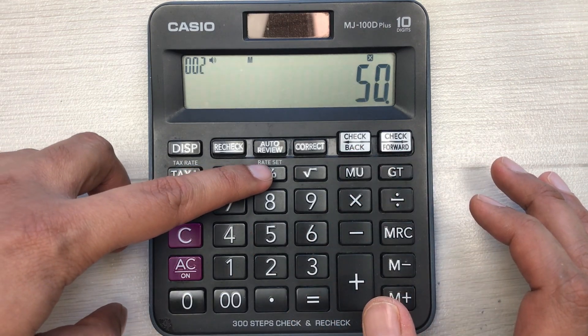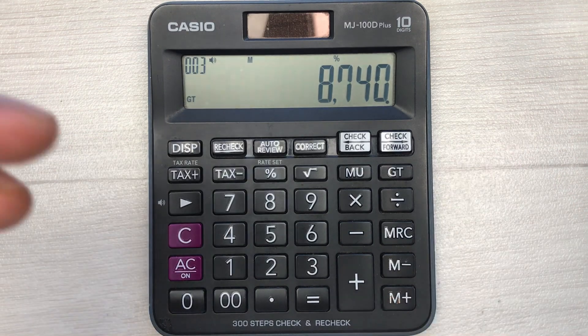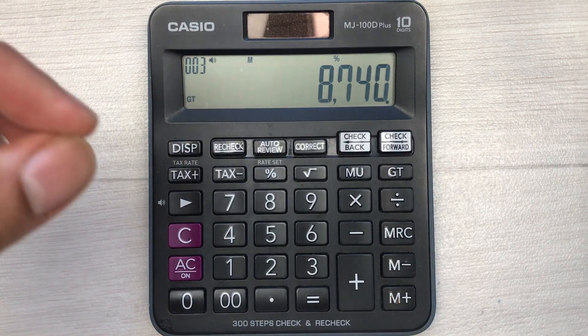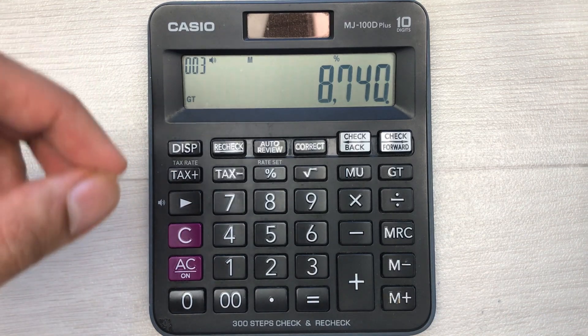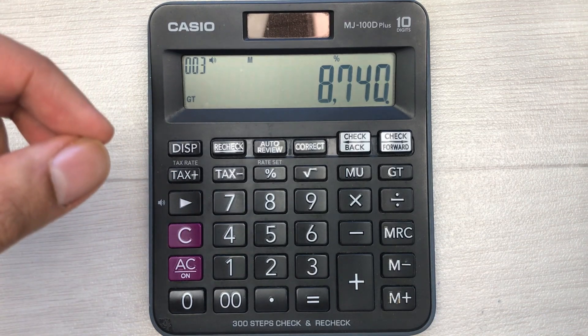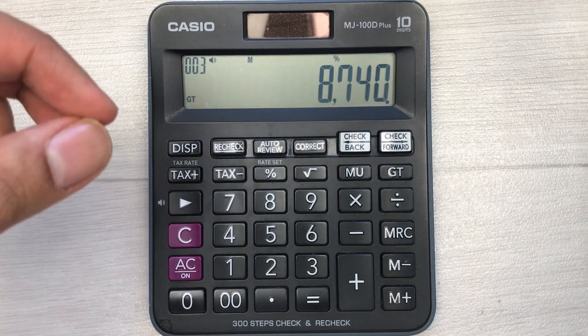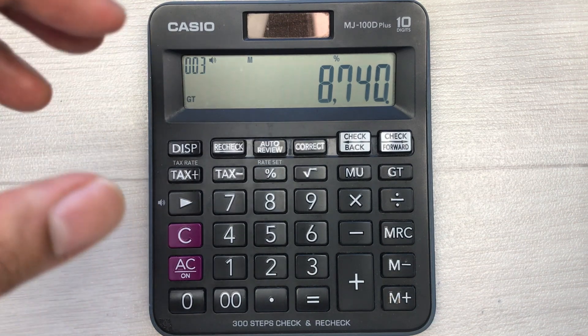In the first step, you have to multiply it with 50, and then you have to press this percentage button. Once you press this percentage button, you will get your final answer. After 50% discount, the amount you have to pay is $87.40.